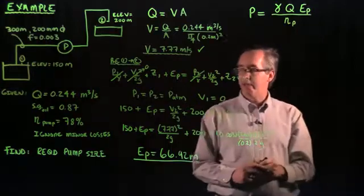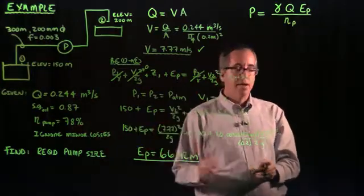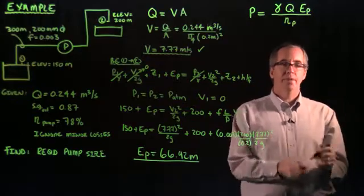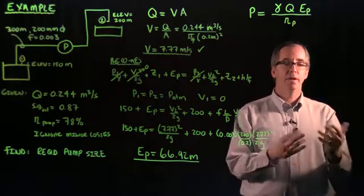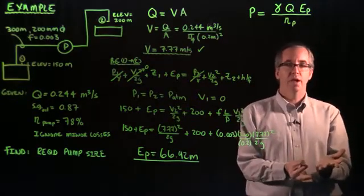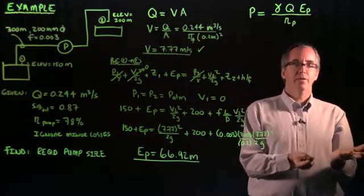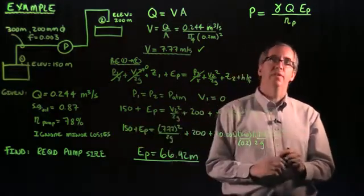And then we divide that by the efficiency of the pump itself. When we divide by the efficiency, in our case it's 78%, by dividing by 0.78, basically we're bumping up the size of the pump. We're saying the pump's not going to work at 100%. So we actually have to increase the size of the pump to overcome the fact that it's only 78% efficient.